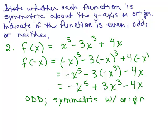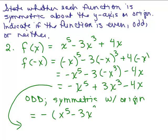You can go one more step and write that as the opposite of x to the fifth minus 3x cubed plus 4x — this is a formal way of finishing off the problem. You've really written that f of negative x is the same as negative f of x. Therefore, it's an odd function and it's symmetric with the origin.